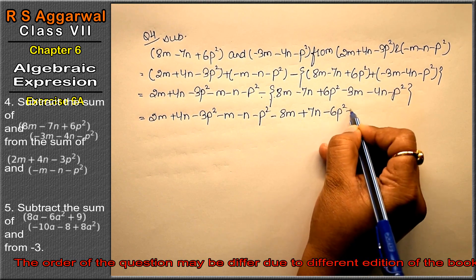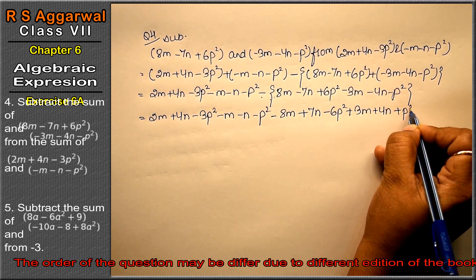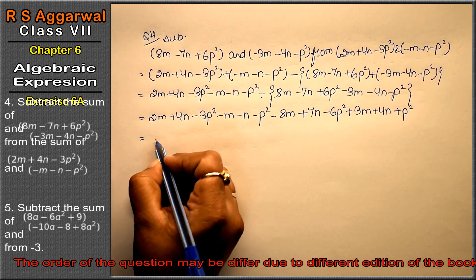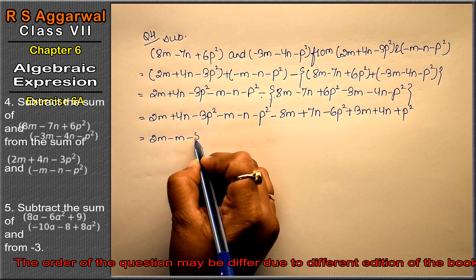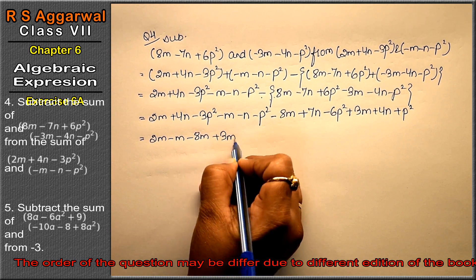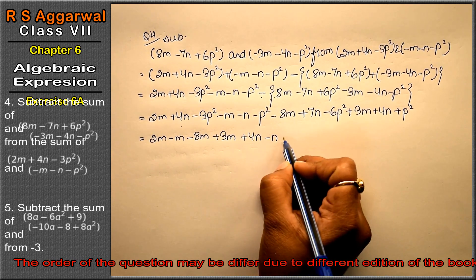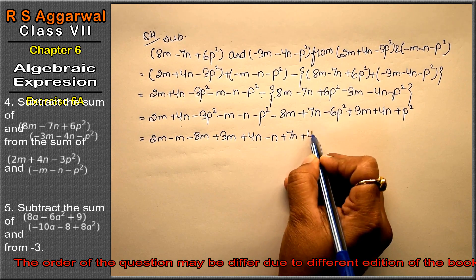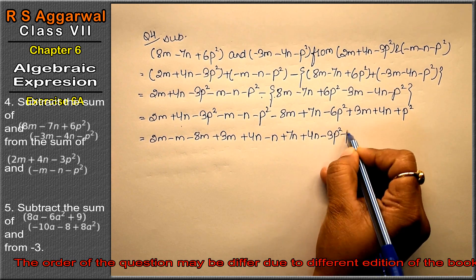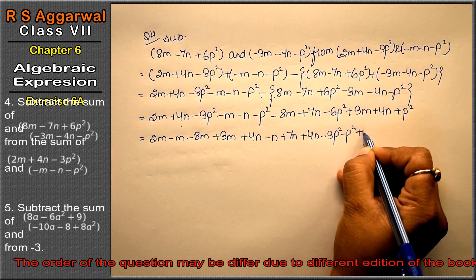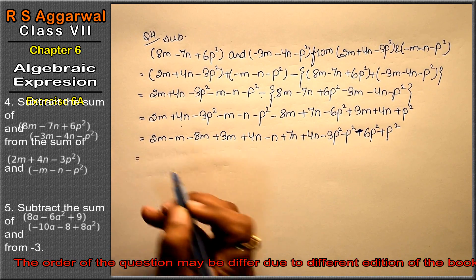The plus becomes minus and the minus becomes plus. So we get plus 3m plus 4n plus p². Now collecting like terms — m terms: 2m minus m minus 8m plus 3m. n terms: 4n minus n plus 7n plus 4n. p² terms: minus 3p² minus p² minus 6p² plus p².